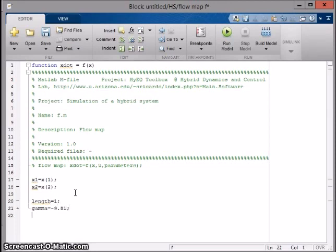Lastly, we provide x dot. The column vector x dot contains the values of theta dot and theta double dot. We type in x of 2 and gamma over length times the sine of theta, or x1.